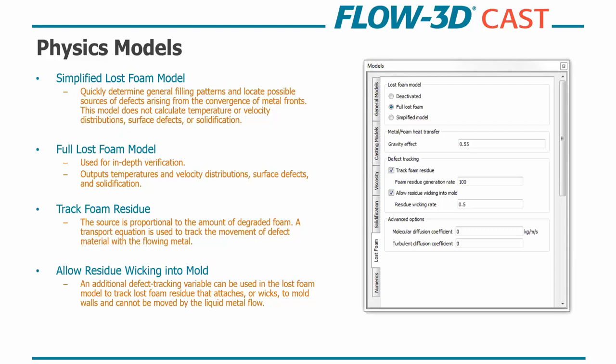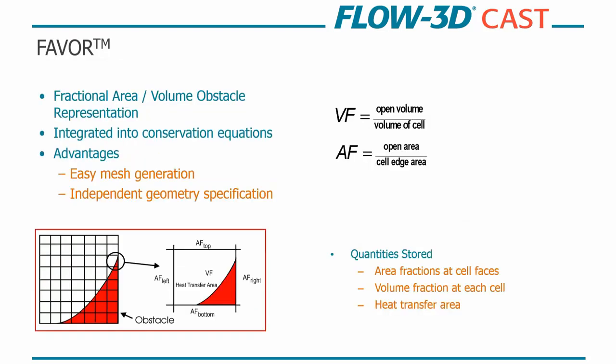So the transport equation is used to track the movement of defect material with the flowing metal. And then you can also turn on wicking onto the mold. So you track the foam residue that's attaching to the mold walls so that then it can't be moved by the liquid metal flow. So we select our material. We're going to highlight our relevant physics models. And then from there, we're ready to bring in our geometry. So Flow3Dcast can easily and automatically mesh geometry to a user's defined computational cell size. Obviously, the finer the cell size, the more definition you're going to have in your simulation. But that's up to the user and fully defined by you, depending on your computational load or what you want to see in your part.